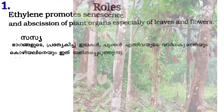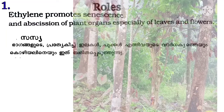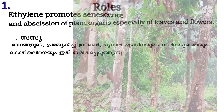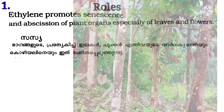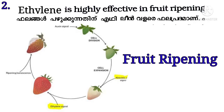Ethylene promotes senescence and abscission of plant organs, especially of leaves and flowers. Ethylene is also highly effective in fruit ripening.